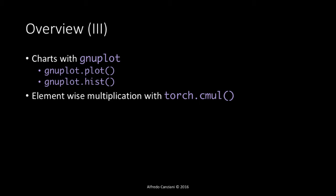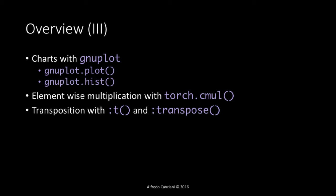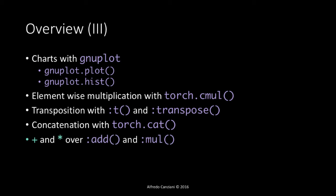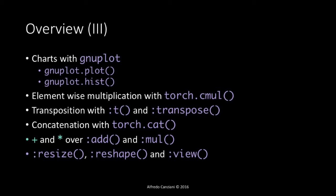We'll see how to multiply element-wise two different tensors, how to apply a transposition of a matrix or a generic tensor with the transpose operator. We'll also see how to concatenate multiple tensors, and the distinction between the plus and star operators versus their corresponding add and multiply functions. Finally, we'll see what resize, reshape, and view are — although they perform similar operations, they are distinct, and it's important to keep in mind their differences.